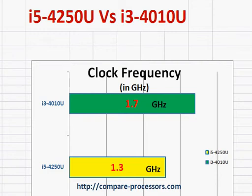Let's compare the Intel Core i5-4250U with the i3-4010U. The first thing you should know is that both of them are Haswell processors, which you can identify from the first digit after 'iX', which is 4.